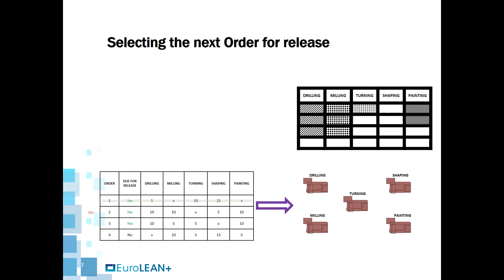Next is order 2, but it cannot be released because the card it requires for shipping is not available on the planning board. That is an indication that shipping has already reached the maximum workload limit, so order 2 must wait in the backlog list until a card becomes available again for shipping.